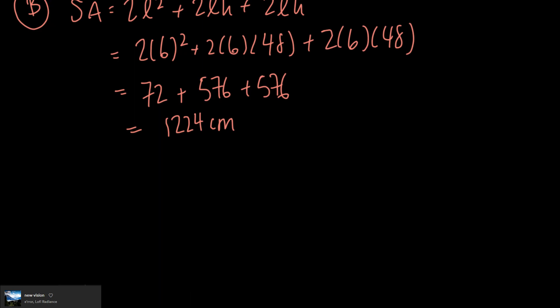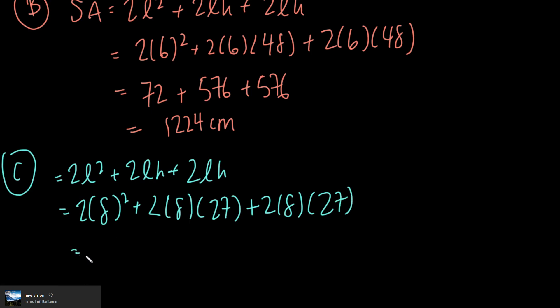Let's look at option C now. Again, it equals 2L² + 2LH + 2LH. In this case, I have a height of 27 and a length of 8, so 2 times 8² plus 2 times 8 times 27 plus 2 times 8 times 27.